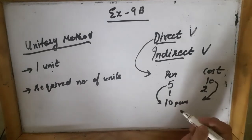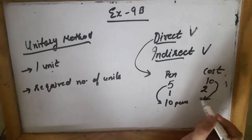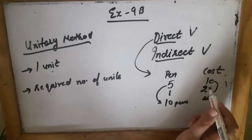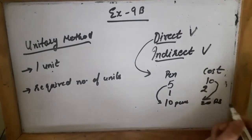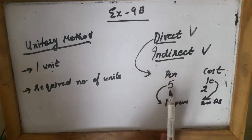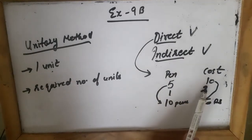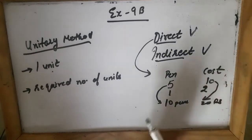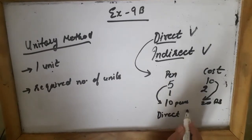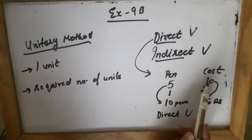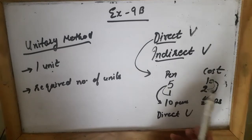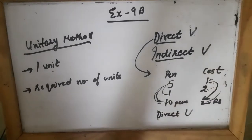The cost of one pen is 2 rupees. If I want to buy 10 pens, the cost of 10 pens will be 10 multiplied by 2, which is 20 rupees. As I can see, if the number of pens has decreased, the cost also has decreased. If the number of pens have increased, the cost also has increased. This was direct variation — the decrease in one causes the decrease in the other, and the increase in one causes the increase in the other.